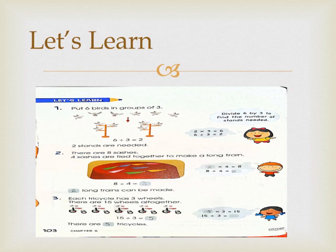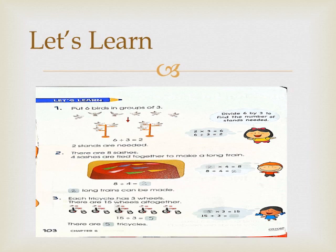Question number 2: There are 8 sashes. 4 sashes are tied together to make a long train. So 4 are tied together and the other 4 are tied together. How many trains are there? The answer is 2. Taking help from the multiplication table: 2 4s are 8, so 8 divided by 4 equals 2. Two long trains can be made.